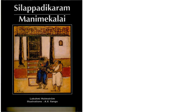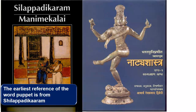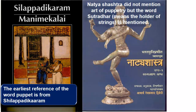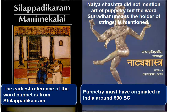The earliest reference of puppetry is found in Silappadikaram, which is a book in Sangam literature. The earliest reference of the word puppet is from Silappadikaram, not from Naatya Shastra. Dance and music are mentioned in Naatya Shastra, but puppetry is not. The word 'sutradar' is mentioned in Naatya Shastra - meaning the director - but not puppetry art itself. Puppetry may have originated around 500 BC.